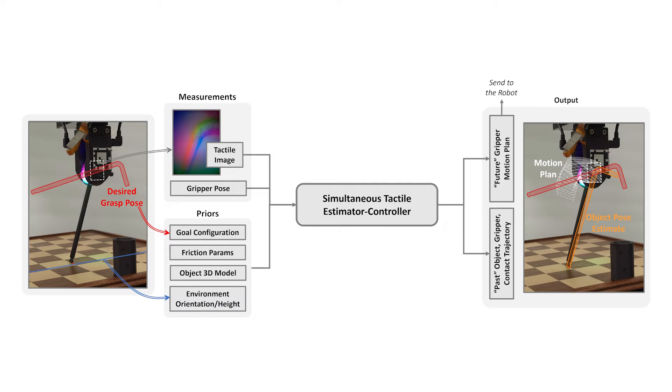Using these inputs, our tactile estimator controller estimates the object pose online and computes a receding horizon motion plan to achieve the desired manipulation objective.